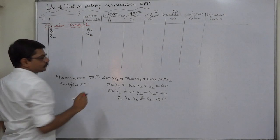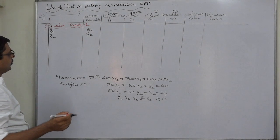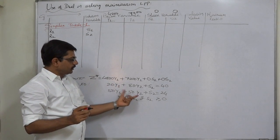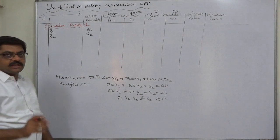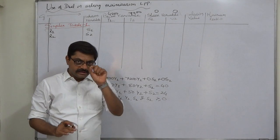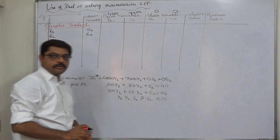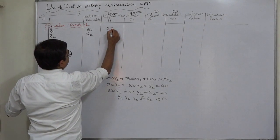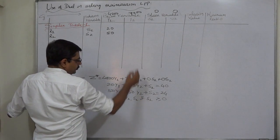Slack variables become the solution variables. In the simplex method, in the initial solution the value of basic variables are 0, so s1 is 40 and s2 is 40. If you solve this problem through the graphic method, at point (0, 0), s1 equals 40 and s2 equals 24. The coefficients of y1 are 20 and 50; for y2 they are 80 and 50 respectively.